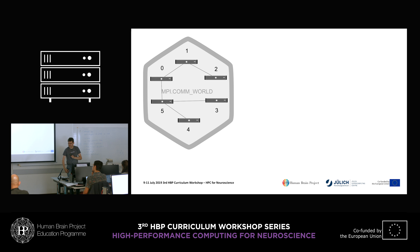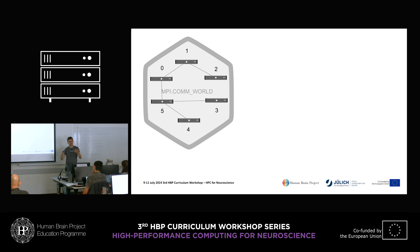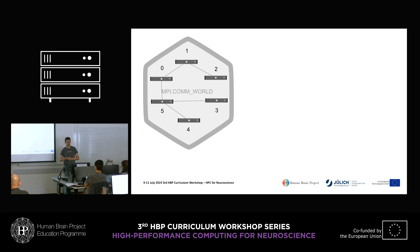The key thing to keep in mind is that collective communications always involve all ranks of a communicator. I say 'a communicator' rather than 'the communicator' because you can generate new ones. MPI_COMM_WORLD is always available from initialization, but you can generate your own communicator to use just a subset of your processes for a particular part of your job.